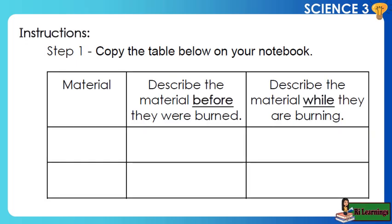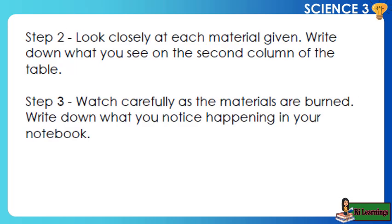Instructions. Step 1: Copy the table below in your notebook. Describe the material before they were burned, and describe the material while they are burning. Step 2: Look closely at each material given and write down what you see in the second column of the table. Step 3: Watch carefully as the materials are burned and write down what you notice in your notebook.